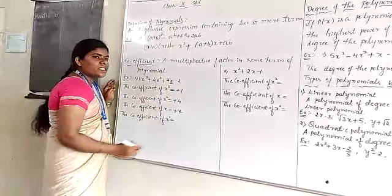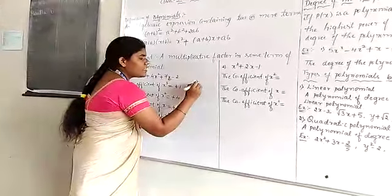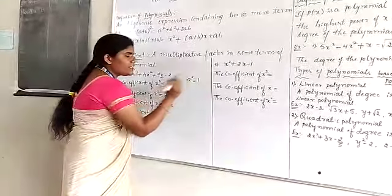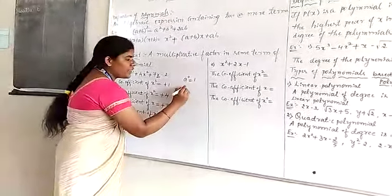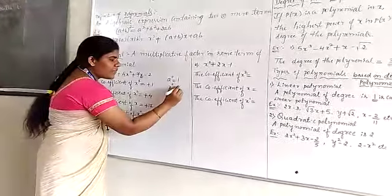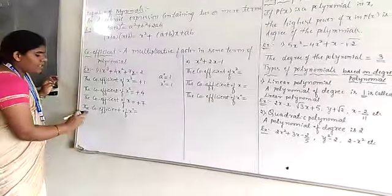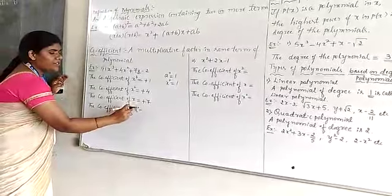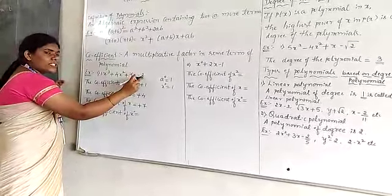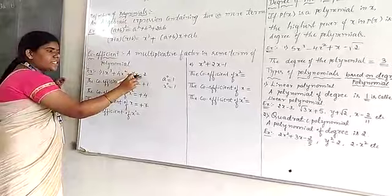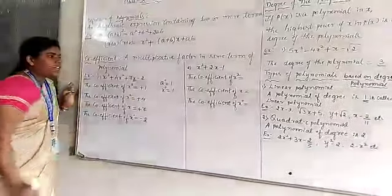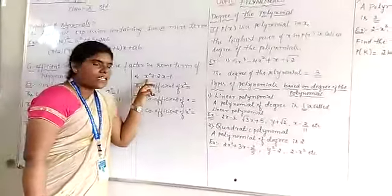Now for the constant term — x variables are not given here. If you already know the law of exponents, a⁰ = 1, so x⁰ = 1. The coefficient of x⁰ — how much is there? 2 is there, but which sign is there? Minus. So it is −2.